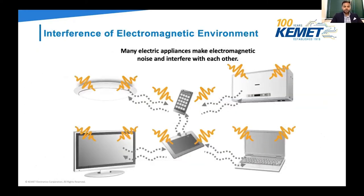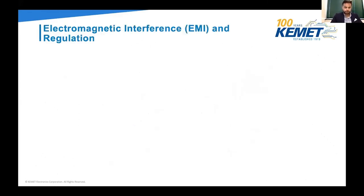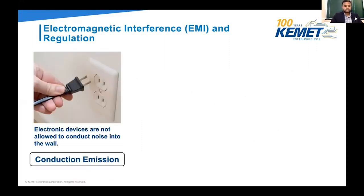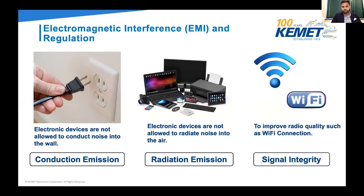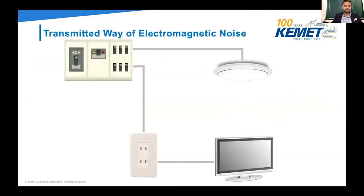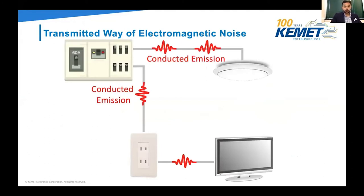Let's talk about EMI. It's not possible to see it, but there's electromagnetic noise all around us. All of our personal devices are generating noise, so it's important to suppress it. Our electronic devices are not allowed to conduct noise into the wall — that's called conduction emission — and they're not allowed to radiate noise into the air, called radiation emission. By controlling these, it improves radio quality and reduces noise.